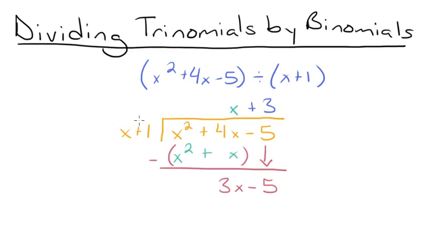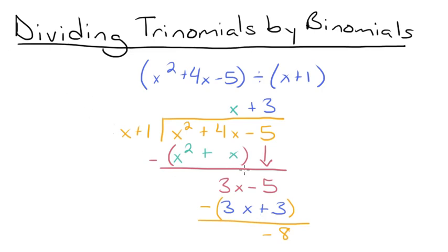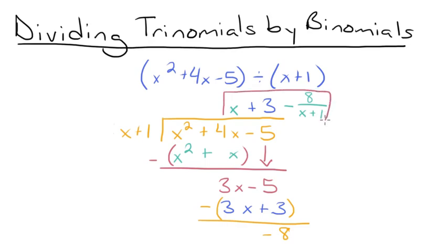Now we're going to multiply 3 by x plus 1. So 3 times x plus 1 is 3x plus 3, and we're going to subtract the two binomials: 3x minus 5 minus 3x plus 3. 3x minus 3x is equal to 0, and negative 5 minus 3 is negative 8. Now we have a remainder. When you have a remainder, you take it and divide it by the divisor and add it to the expression up here. So since we have minus 8, I'm going to put minus 8 in our numerator and x plus 1 in our denominator. And this is our final answer: x plus 3 minus 8 over x plus 1.